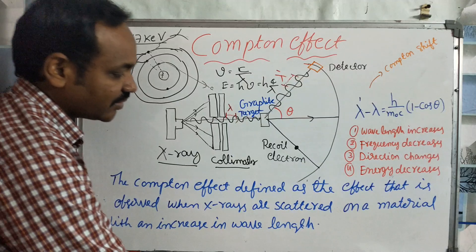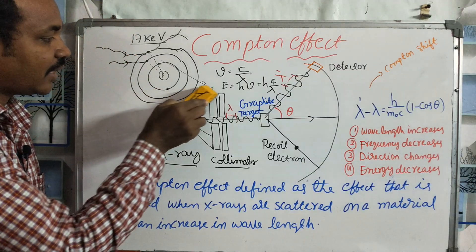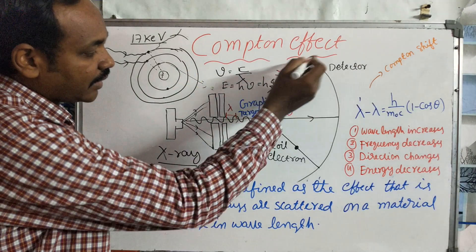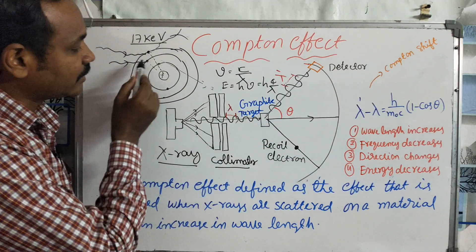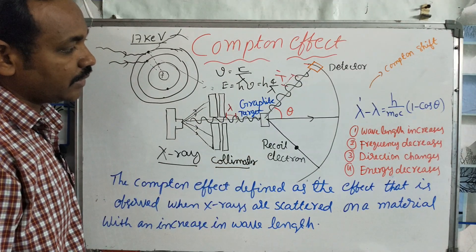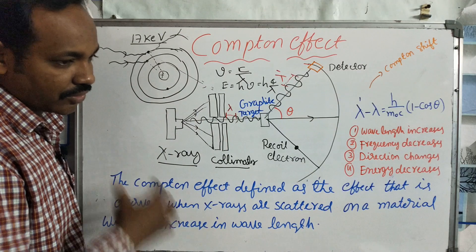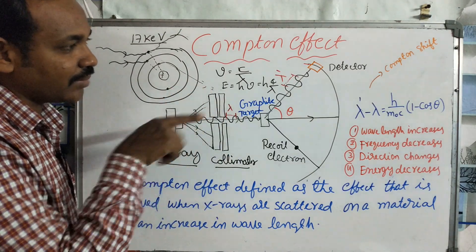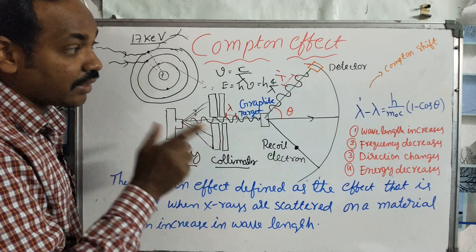We observe the Compton Effect. There may be many doubts. One important concept is the recoil electron — the electron that is knocked out is called the recoil electron. I will prove to you the concept using a billiards game analogy.